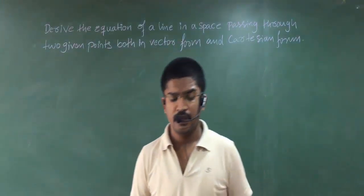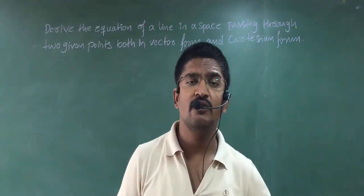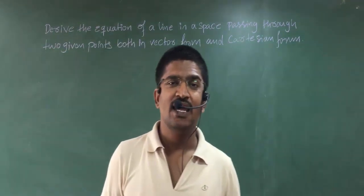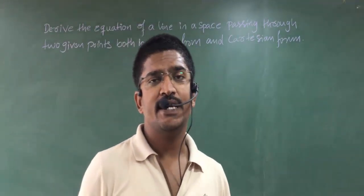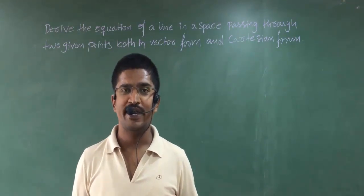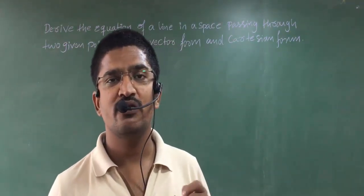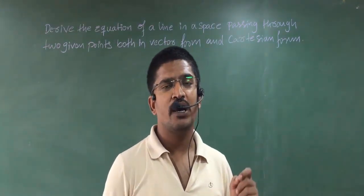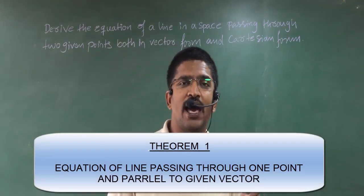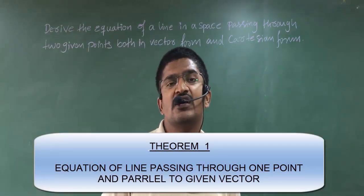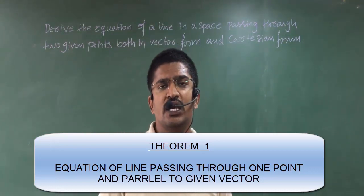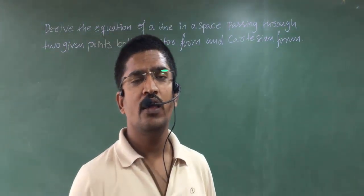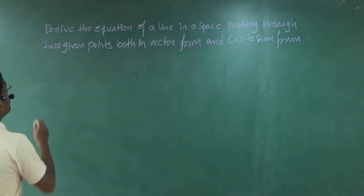Hi students. So now we have seen Theorem 1 of three-dimensional geometry, in which we proved the equation of a line passing through one point and parallel to a given vector in space. We used the equation of parallel lines and solved Theorem 1. Now we shall go for Theorem 2.